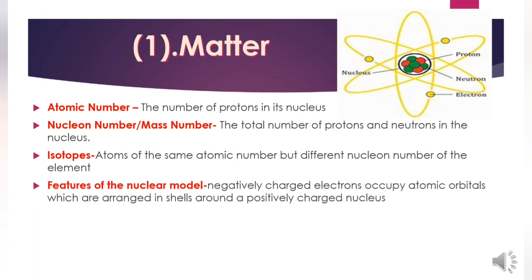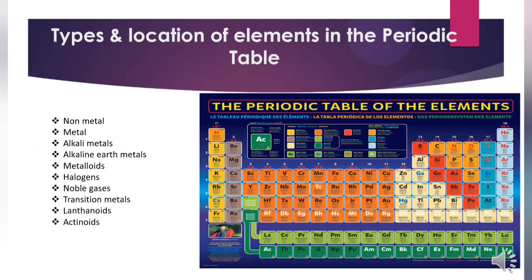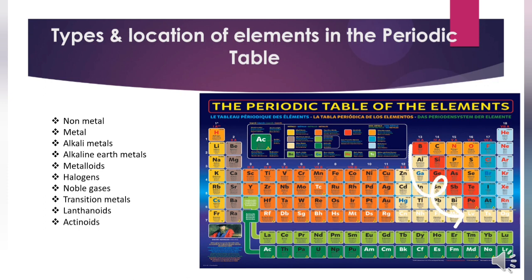Regarding the location of elements in the periodic table: the elements towards the right are non-metals, those towards the left are metals. Some groups also have familiar names. Group 1 consists of alkali metals. Group 2, more specifically calcium, strontium, and barium, are the alkaline earth metals.